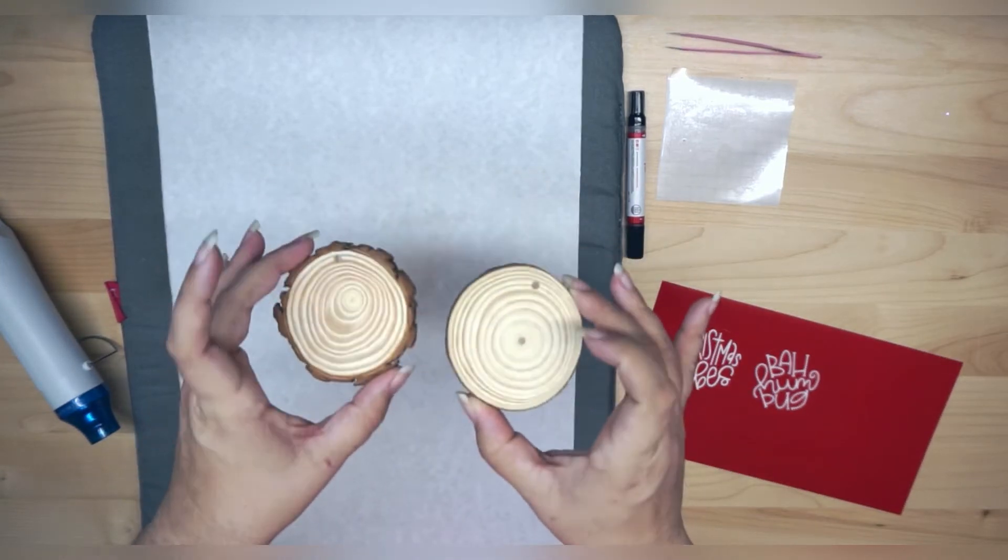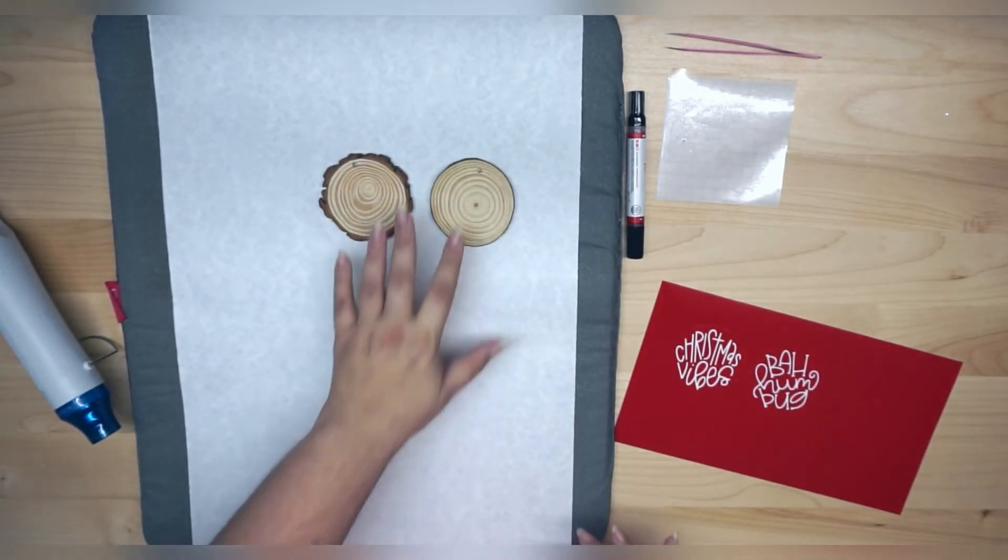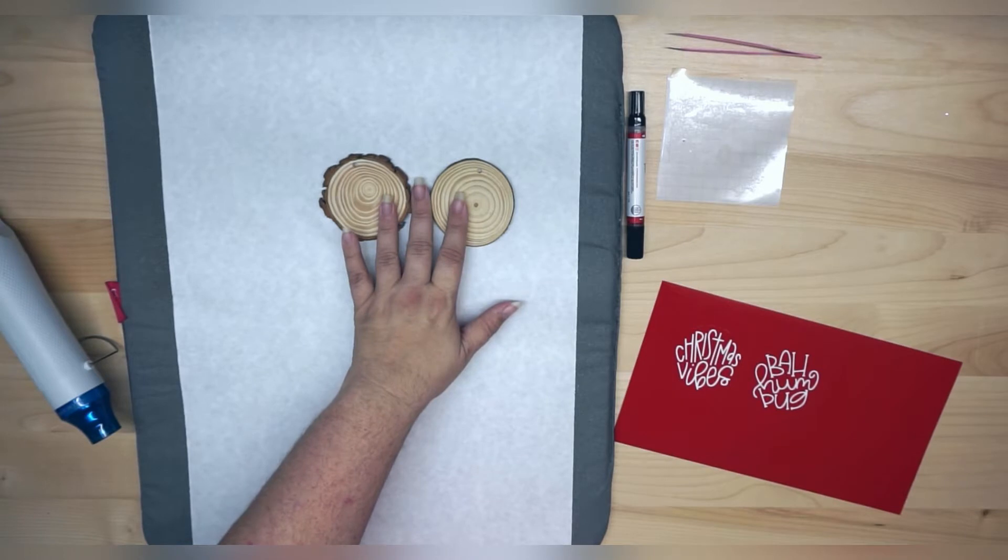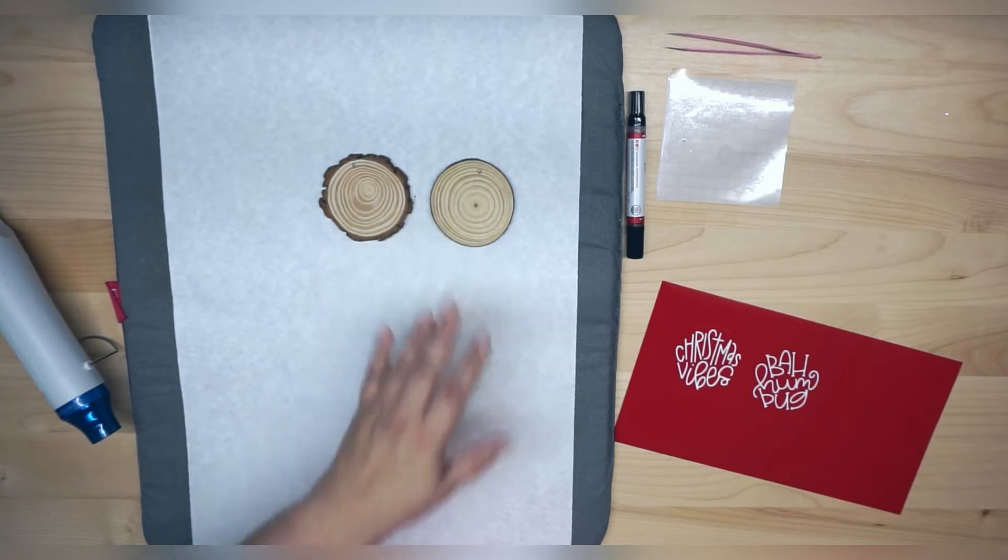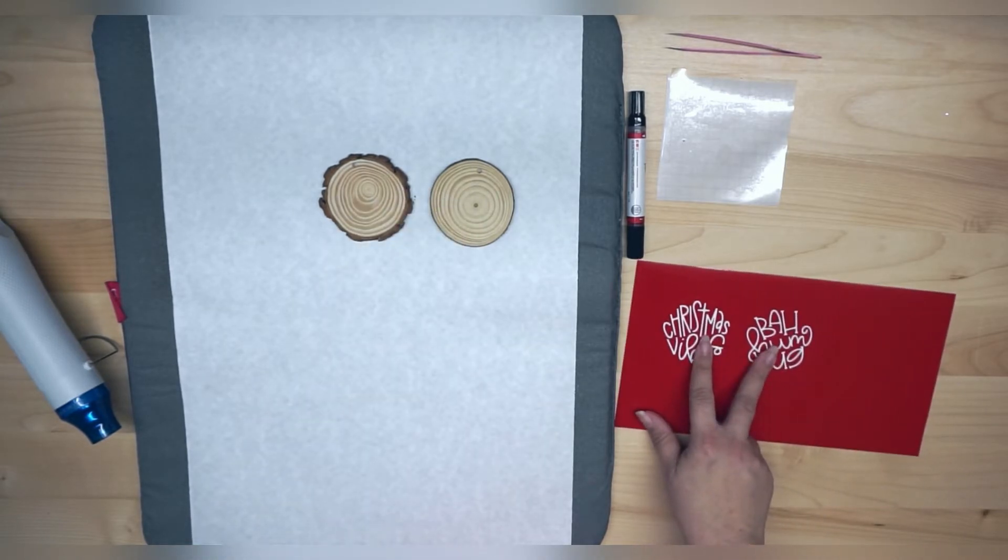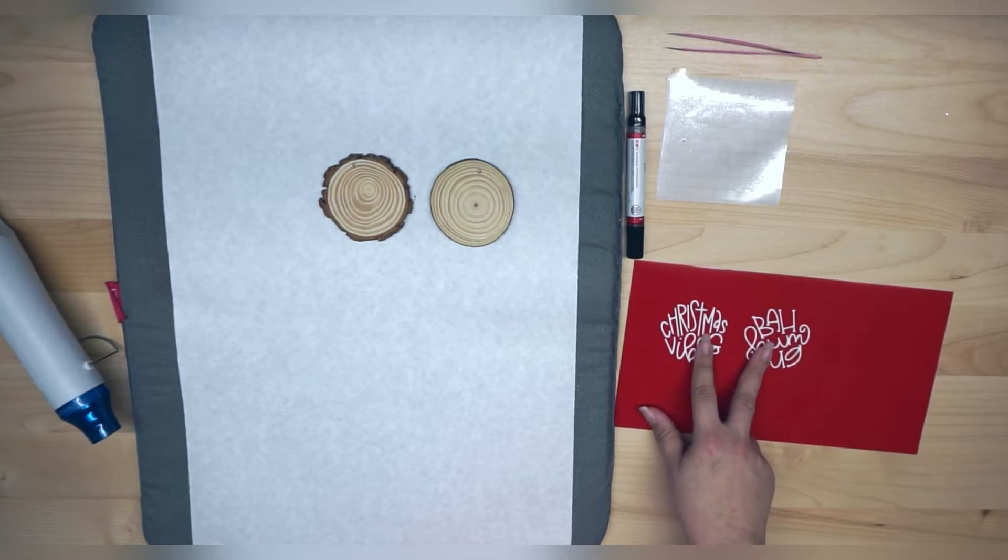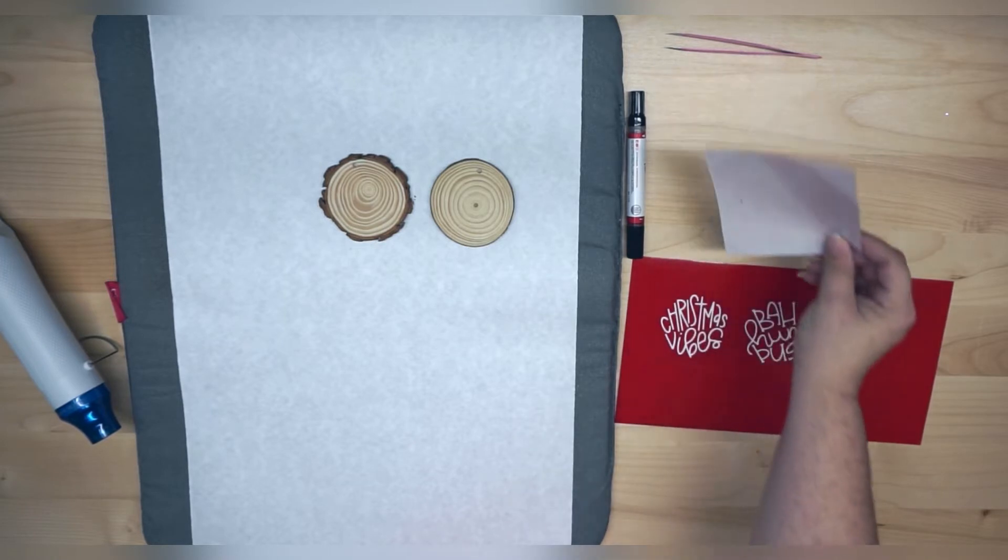These are just simple wood slice ornaments, which make really great test subjects, might I add, because they're very inexpensive. And then I have already cut and weeded a vinyl decal. Now the color does not matter, because we're just going to use it as a stencil. And of course, I have some transfer tape.